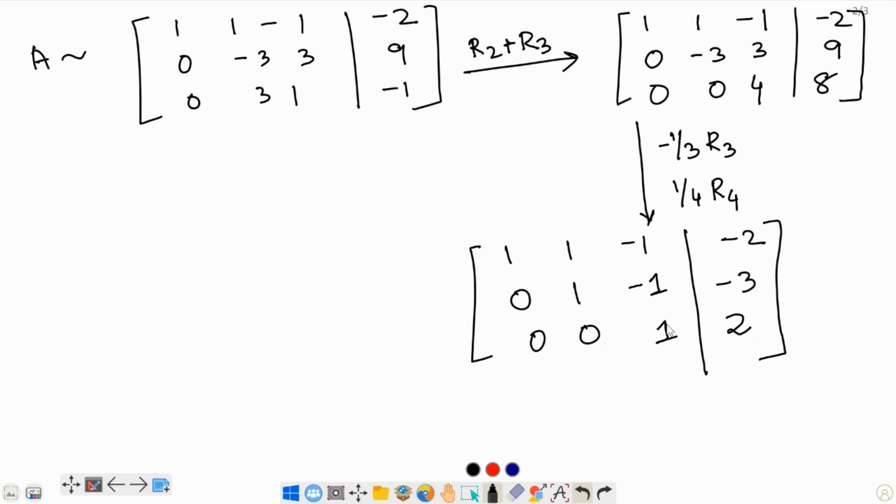Now, what we need to do is convert this back into a system of linear equations. So, column 1 is the coefficients for u. This second column for v and the third column is for w. So, the first equation is u plus 1v minus 1w is equals minus 2. The second one is 1v minus 1w equals negative 3. And the last one is 1w equals 2.